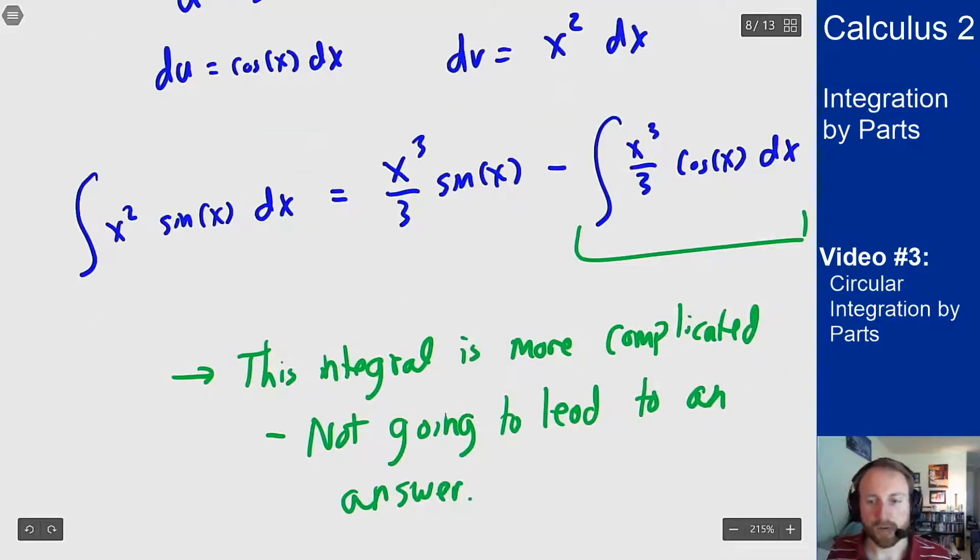So in general if the integral actually gets strictly harder that's the wrong move. If it stays the same you might be okay to solve it out and that's the example we'll see next. But if it gets harder then it's probably the wrong step. You may want to try either a different method or a different choice of u and v for your integration by parts.